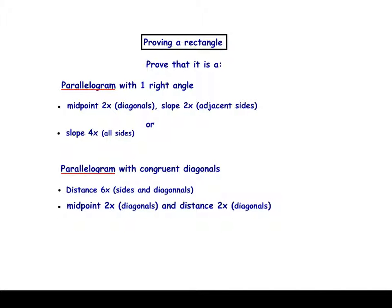Here's a list of suggested ways to prove a rectangle. You could prove that it's a parallelogram with one right angle, because if you have a parallelogram with one right angle, it forces it to be a rectangle, since opposite angles are congruent and consecutive angles are supplementary. One way to do that would be to use the midpoint twice, proving that the diagonals bisect each other to get a parallelogram, and then additionally use the slope twice on one pair of adjacent sides to show those sides have negative reciprocal slopes, meaning they form right angles because they are perpendicular.